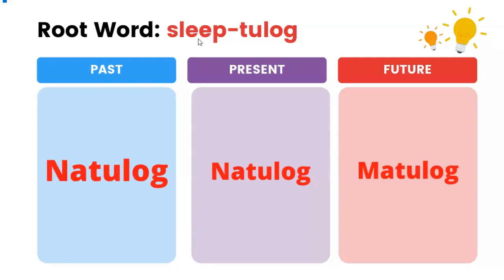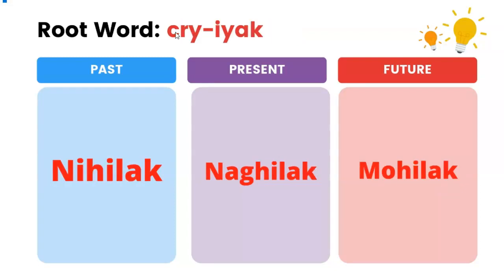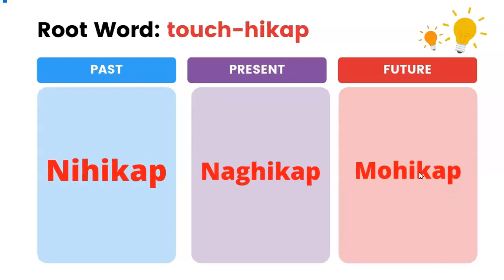Sleep — tulog. Past: natulog. Present: natulog. Future: matulog. Cry — iyak. Past: nihilak. Present: naghilak. Future: muhilak.